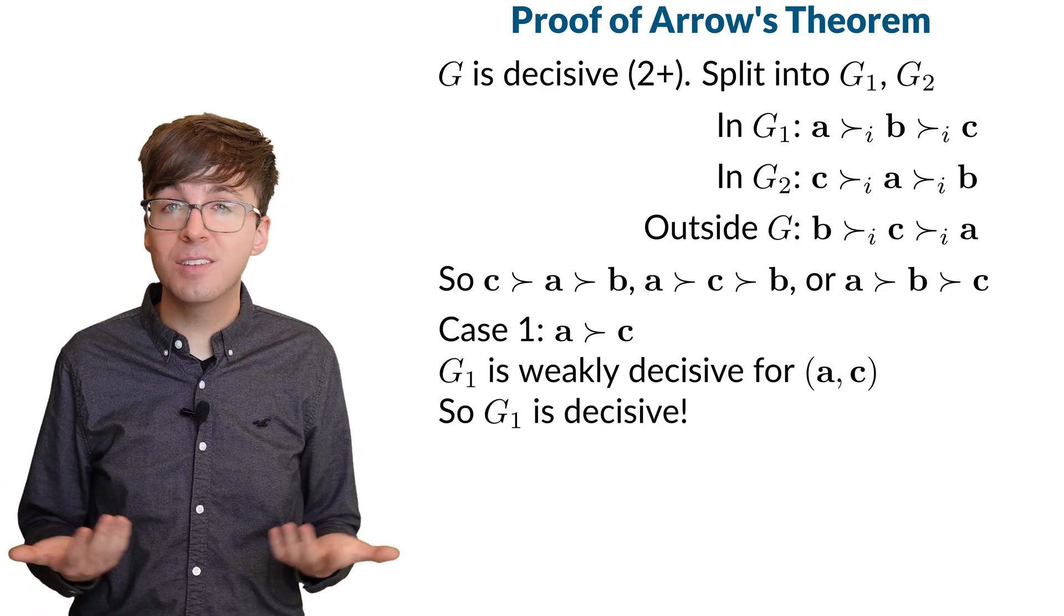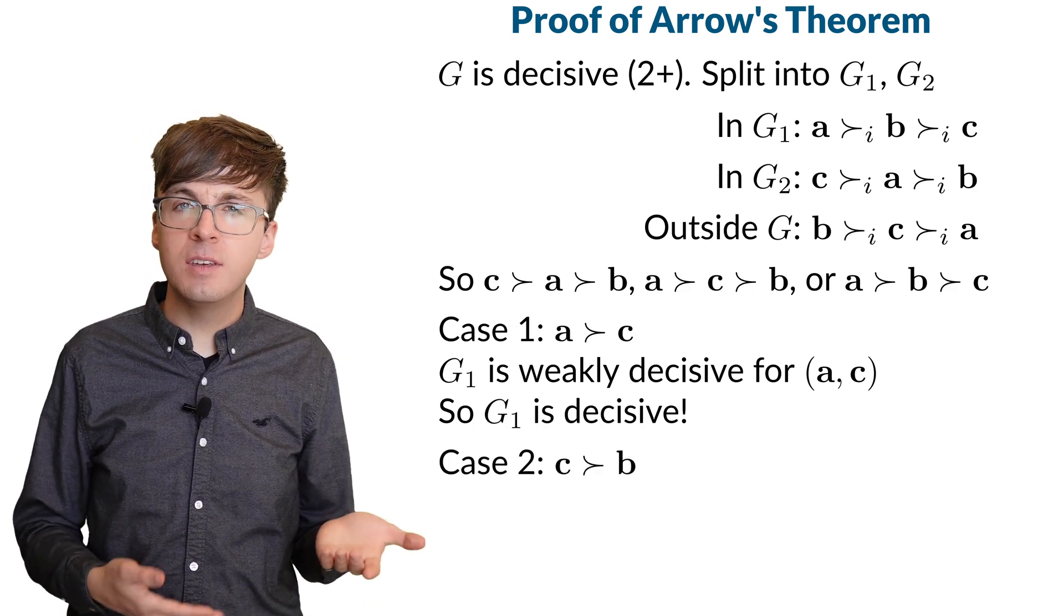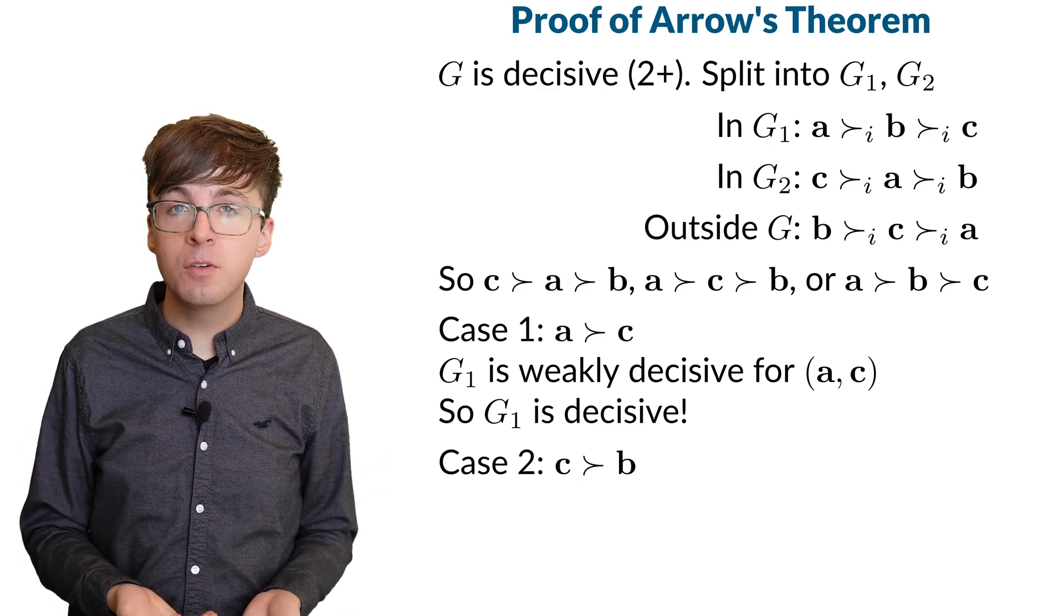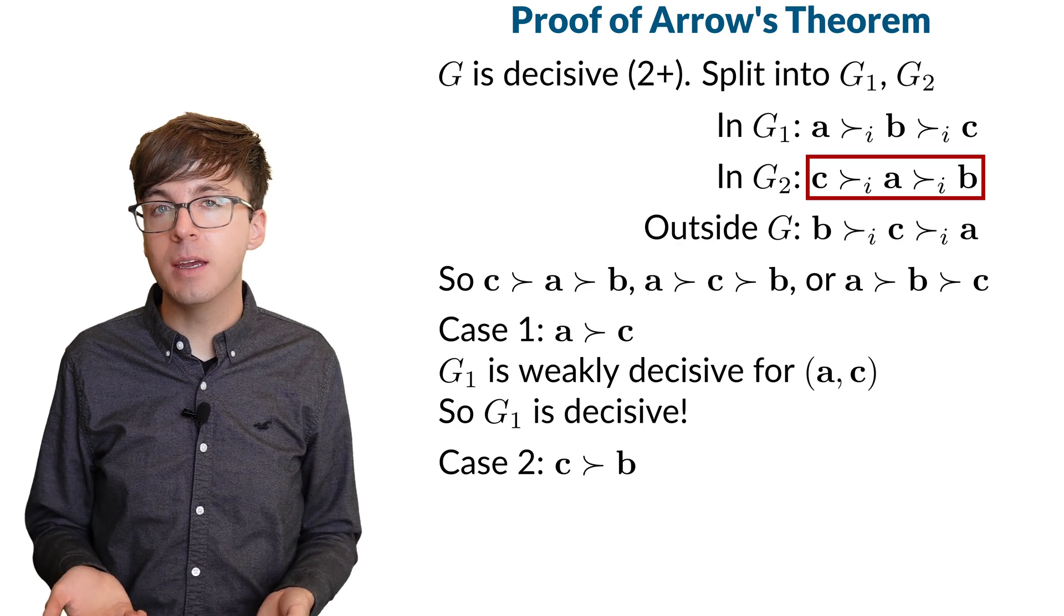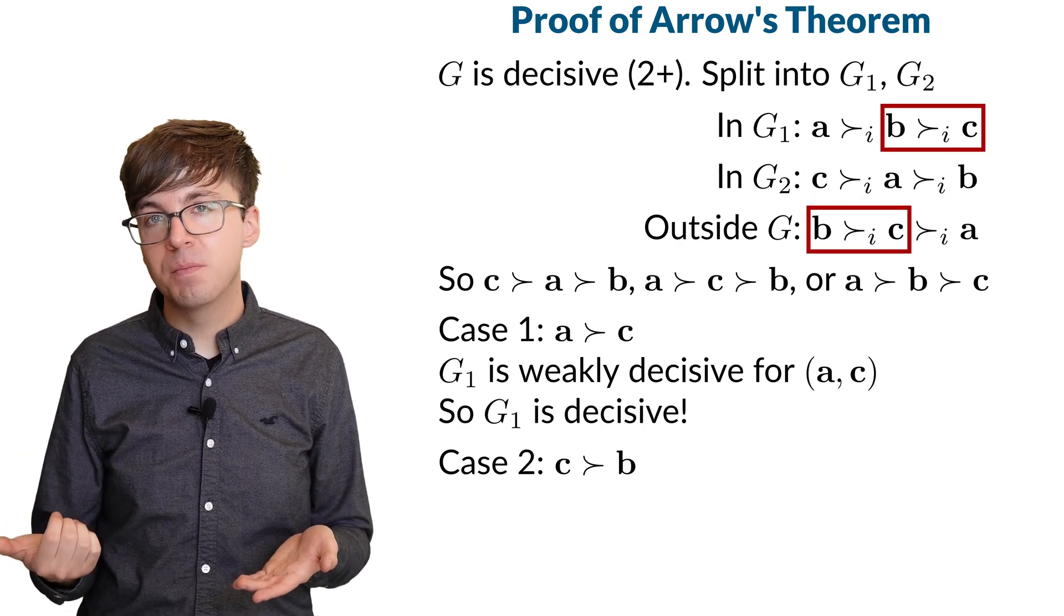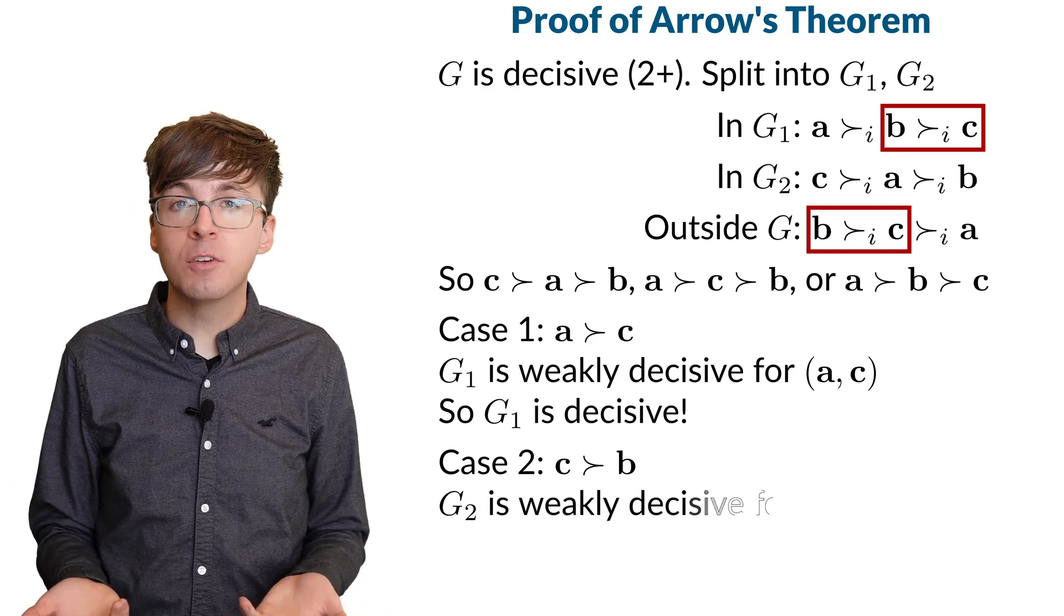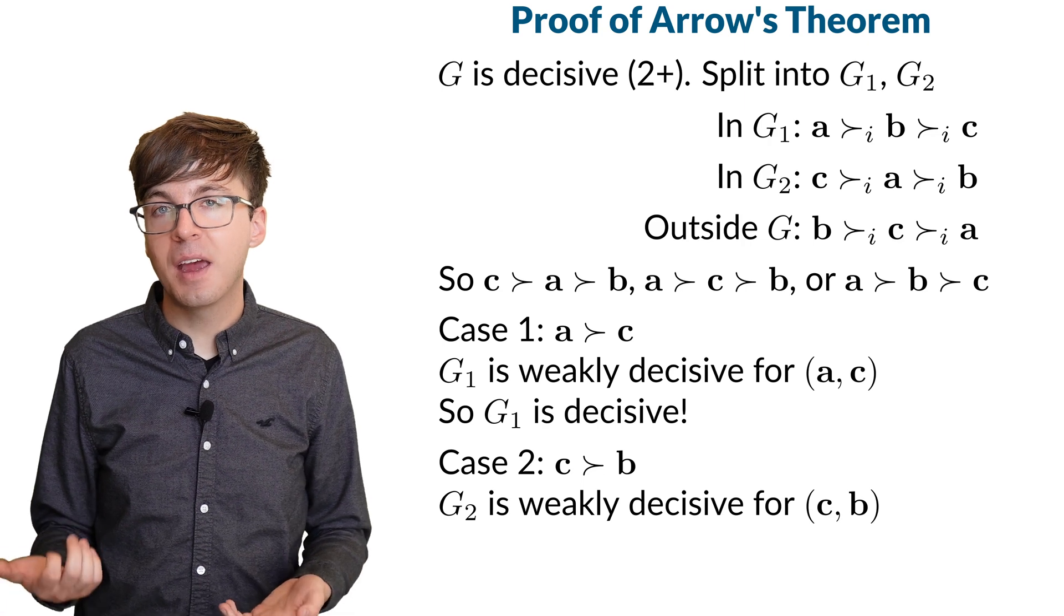But then by our lemma, G1 is a decisive coalition for all pairings. The other case is if C beats B. Now let's look at G2. In G2, everyone voted for C over B. And in the other two groups, they ranked B over C. So this is the definition of G2 being weakly decisive for CB.